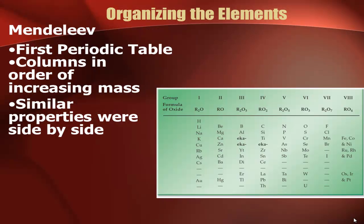Mendeleev is the father of the modern periodic table. Up until this point, they only had lists of elements because they didn't have that many. This is Mendeleev's first periodic table, and you can see there were not a lot of elements there. He was the first to arrange the periodic table, and he arranged it in terms of increasing mass. Things with similar properties were side-by-side. These lines were things he hadn't quite figured out yet, and the 'Eka' labels represent things he was predicting. He organized his periodic table based on how they reacted with oxygen — their reaction with the oxide.